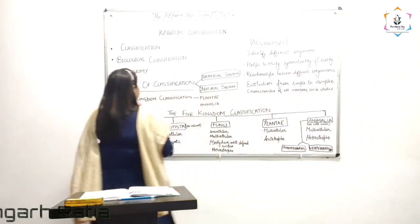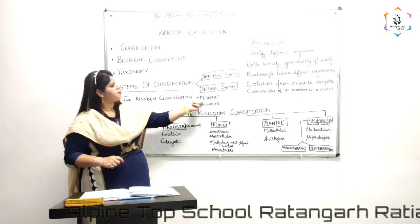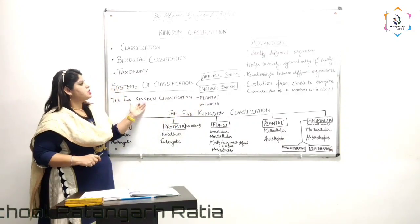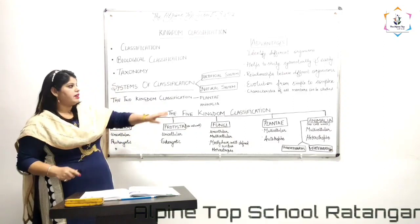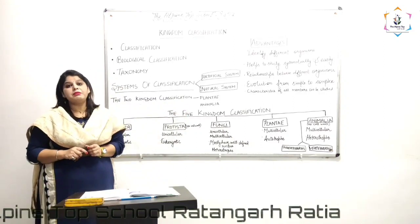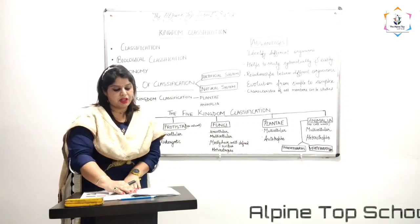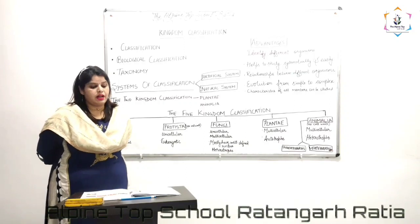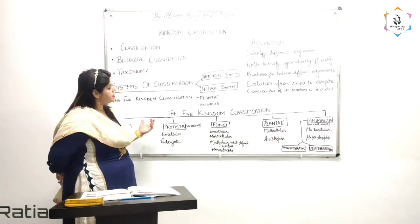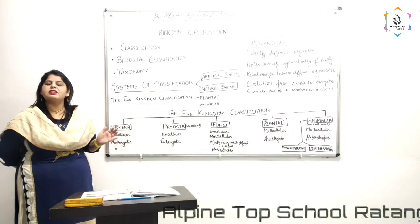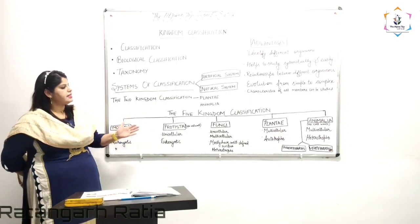We have discussed the artificial and natural systems of classification, and the two-kingdom classification of Plantae and Animalia. But this two-kingdom classification was not adequate because of organisms like Euglena, which is considered a plant but also possesses characteristics of animals. So scientists needed to propose a new system. R.H. Whittaker, in the year 1969, proposed and arranged all organisms into five kingdoms based on their similarities and dissimilarities.